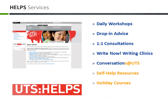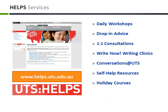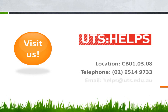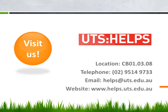Conversations at UTS is a great opportunity to practice your English speaking skills and meet new people. The HELPS website also provides an online self-study guide to essential academic skills. Our holiday courses are intensive English programs that are delivered separately and cover academic writing, pronunciation and presentation courses designed to fast-track your progress in these skills areas. For further information, hop on to our website. HELPS is located in Building 1, Level 3, Room 8, opposite the Careers Service and near the cafe. Our contact details appear on your screen. Please feel free to drop in and have a talk to one of our advisors at any time.